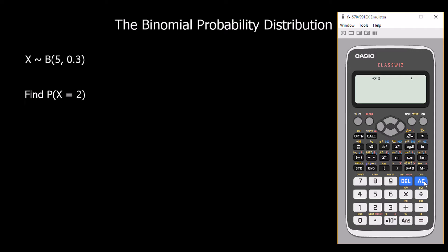Here we've got some different notation. We've got X with a squiggly line — that means 'is distributed' — and B means binomial. So the first number is N, how many trials there are: five trials. The probability of success each time is 0.3, and we want to know the probability of two successes. We go to menu seven again — it's a binomial PD question.